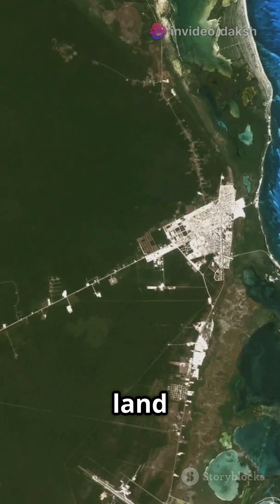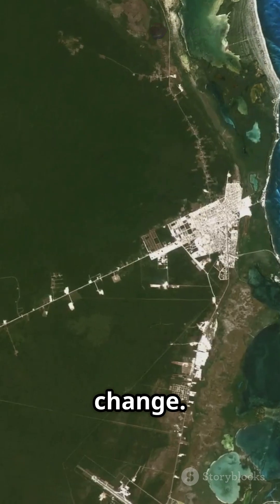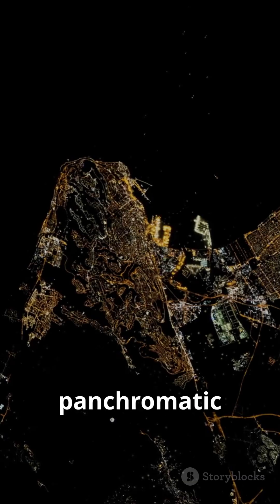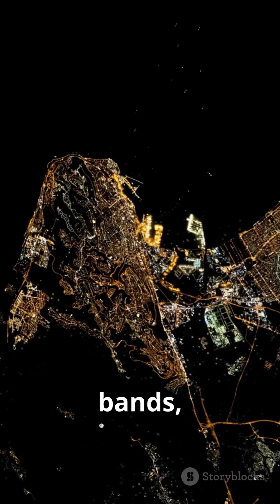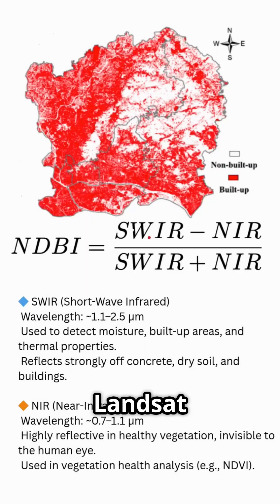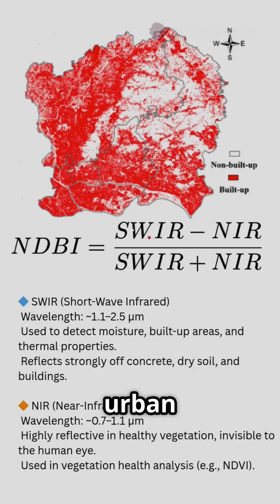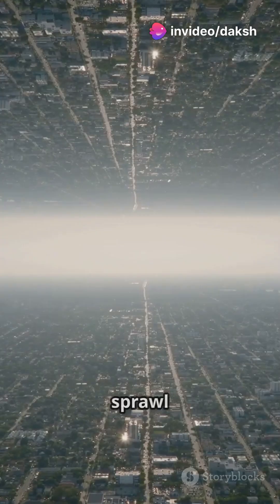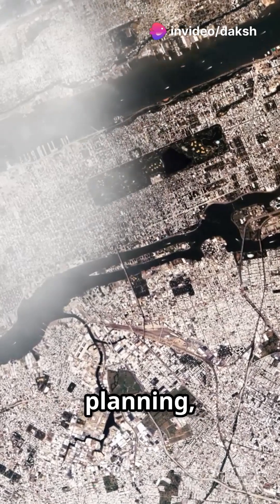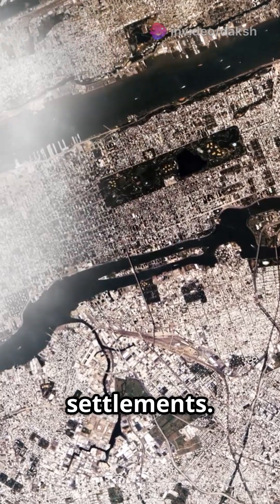Second, urban growth and land use change. Using panchromatic and shortwave infrared bands, Landsat helps city planners visualise how urban areas expand over time. It's used in urban sprawl analysis, infrastructure planning and mapping informal settlements.